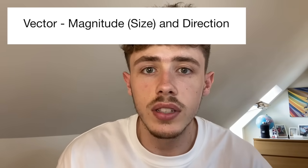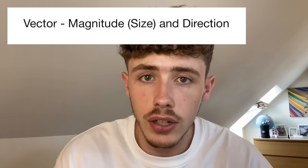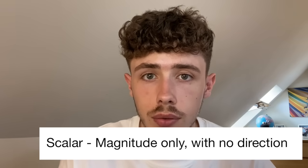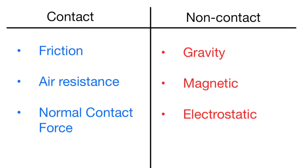Starting off with forces — vectors and scalars. Vectors are a quantity that contain magnitude and direction; scalars only a magnitude. You should also know a couple of examples of contact forces and non-contact forces. Contact forces include friction and air resistance. Non-contact forces include things like electrostatic, gravitational, and magnetic.